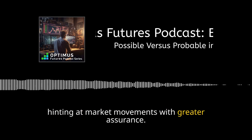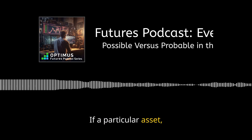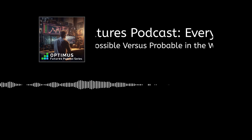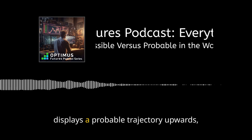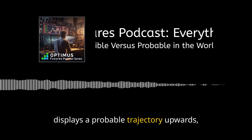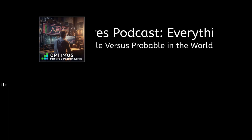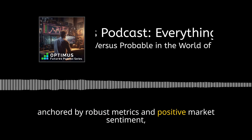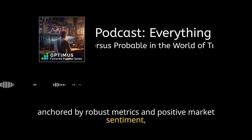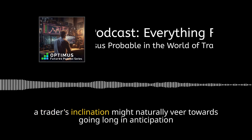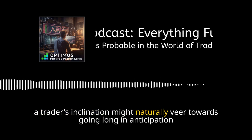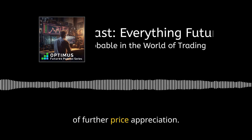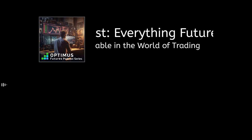If a particular asset — say a futures contract — displays a probable trajectory upwards, anchored by robust metrics and positive market sentiment, a trader's inclination might naturally veer towards going long in anticipation of further price appreciation.